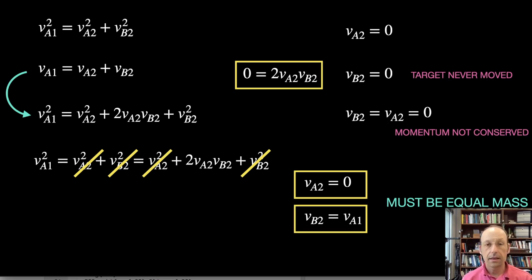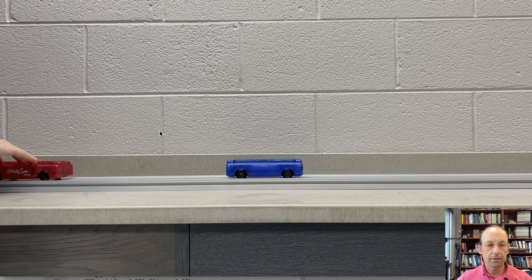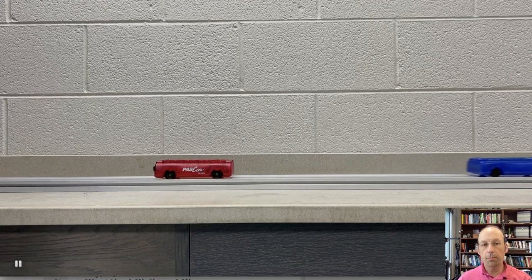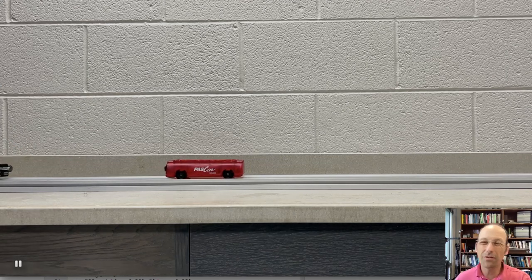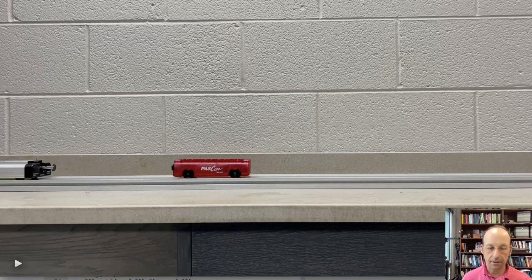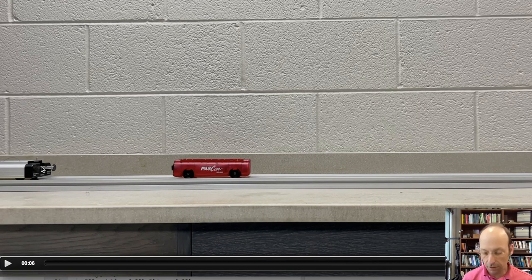You've seen this with pool balls. This happens in an elastic collision between two objects of equal mass — it has to be equal mass. Here it is again: the red car stops and the blue car moves. It wasn't a perfect collision, but that's fine. I was using the other cart to launch the red cart.